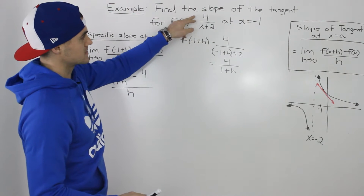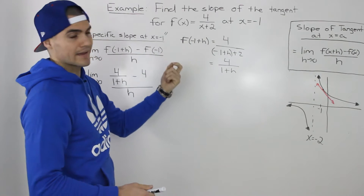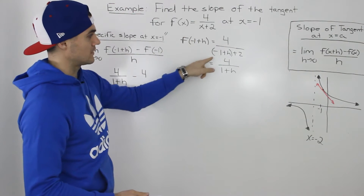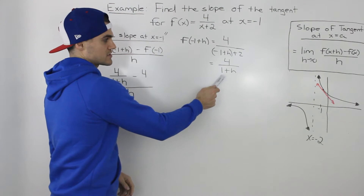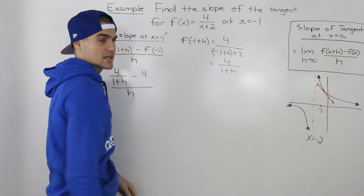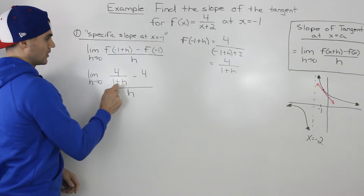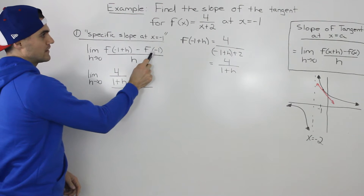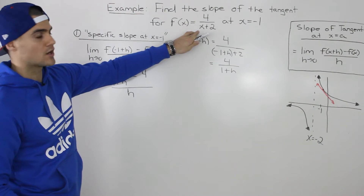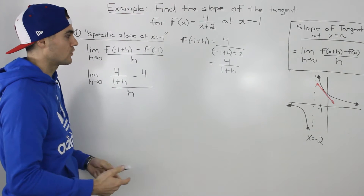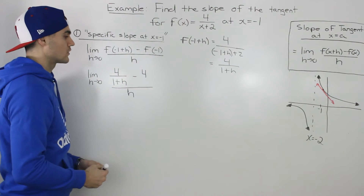If f(x) = 4/(x+2), then f(-1+h) means plugging in (-1+h) for x. The -1 + 2 simplifies to 1, leaving 4/(1+h). Then f(-1) means plugging in -1 for x: the denominator gives -1+2 = 1, so 4/1 = 4. This is still all over h.